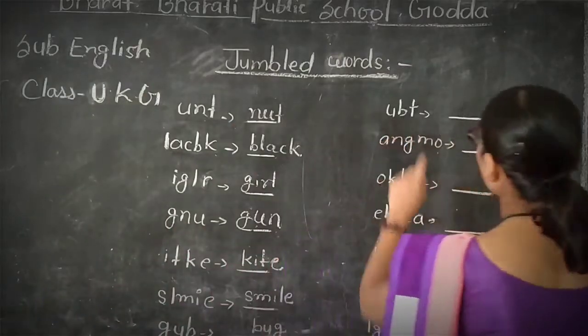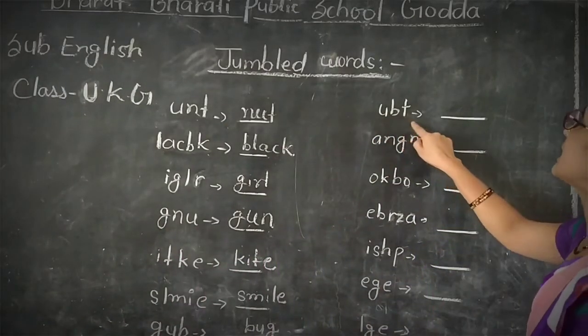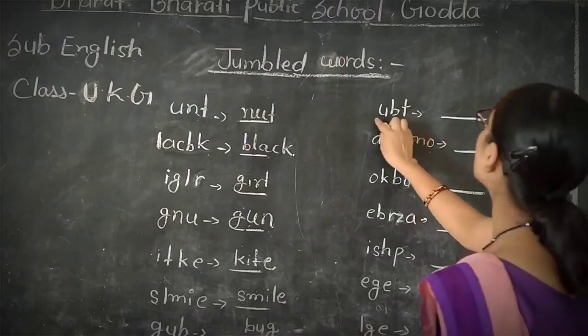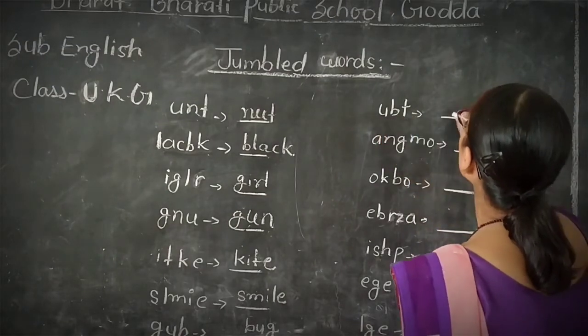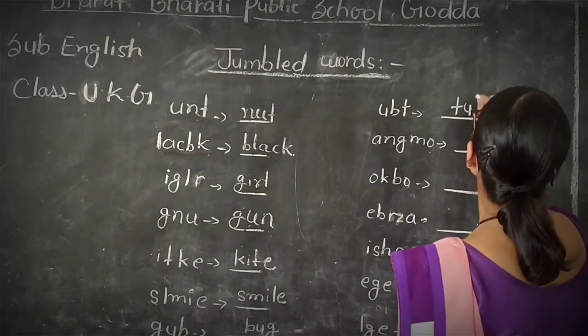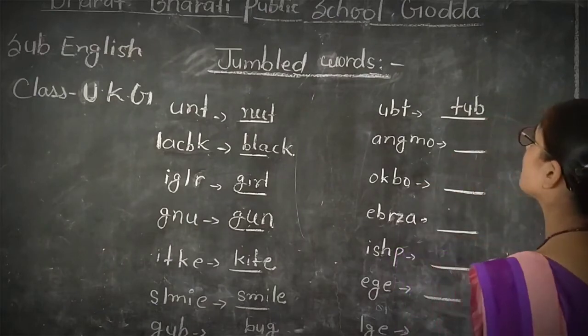There is T, O, B, T. So this word is a noun. T, U, B — TUB.